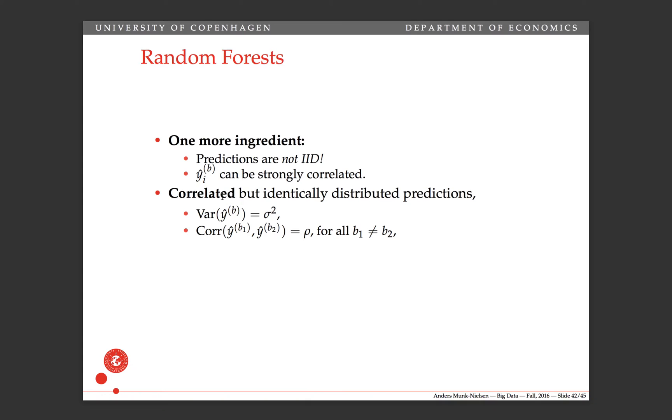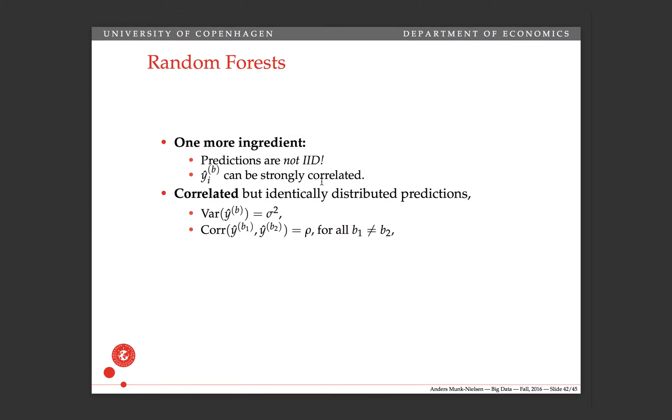In this video we're going to think about the individual predictors from the bootstrap sample B as each of them having the same variance sigma squared but that the correlation of y hat B1 and B2 is equal to rho for all B1 not equal to B2.